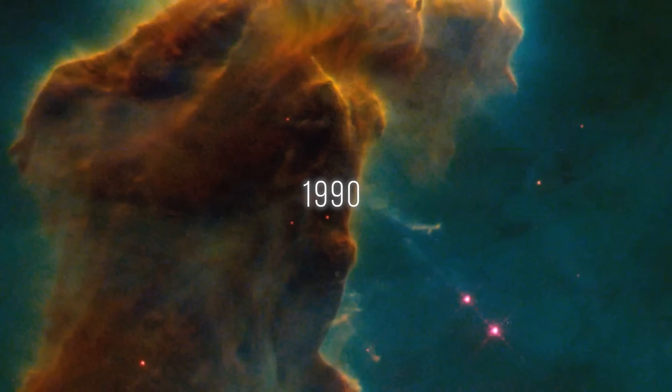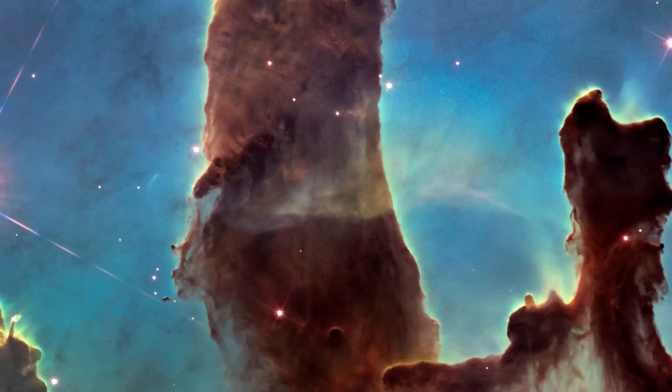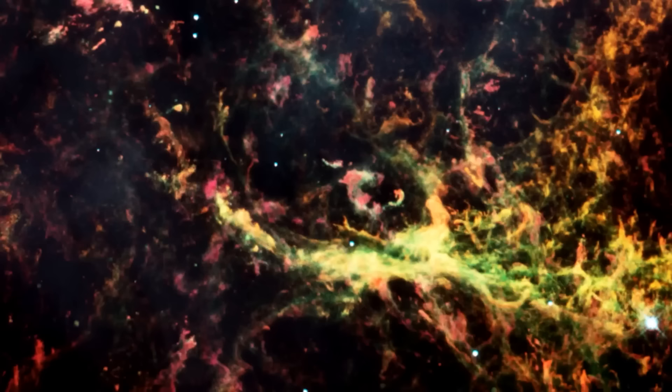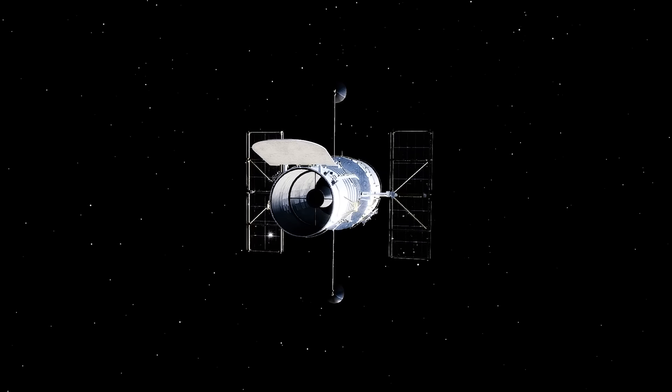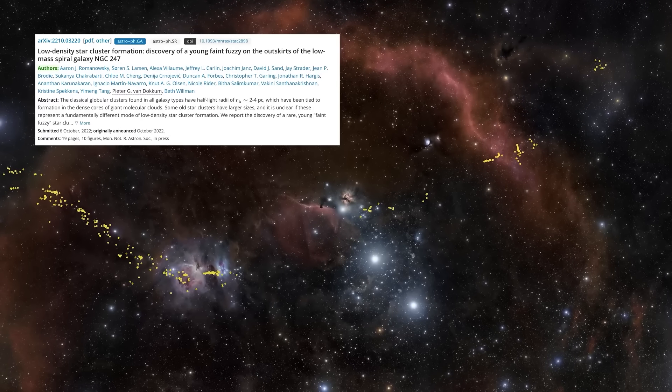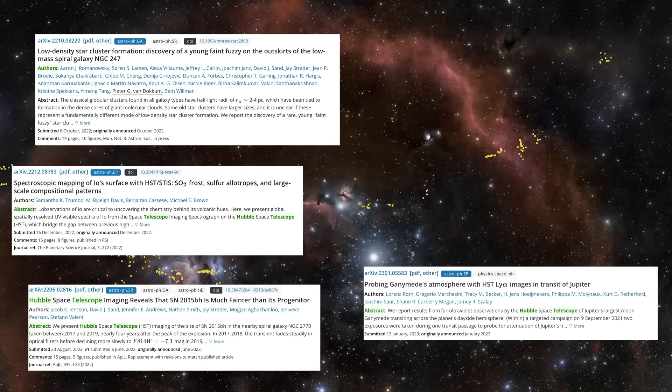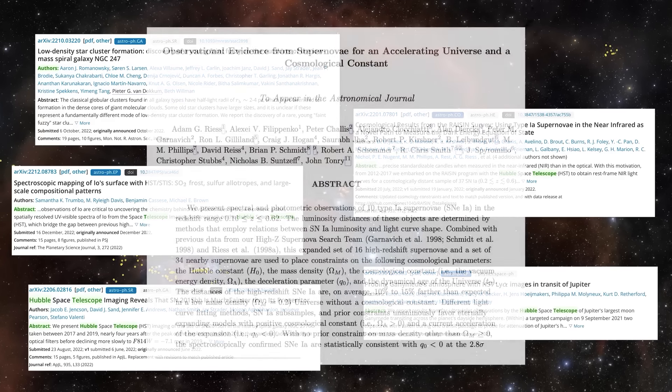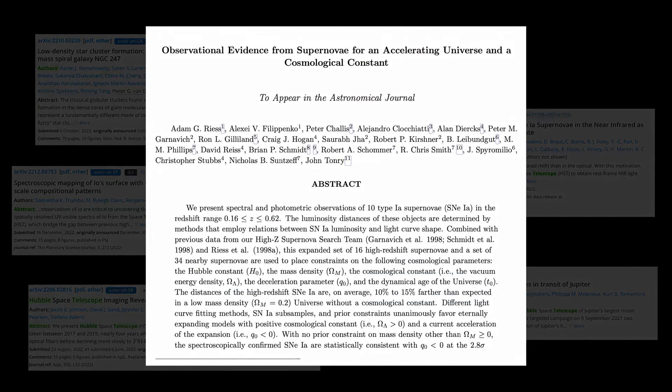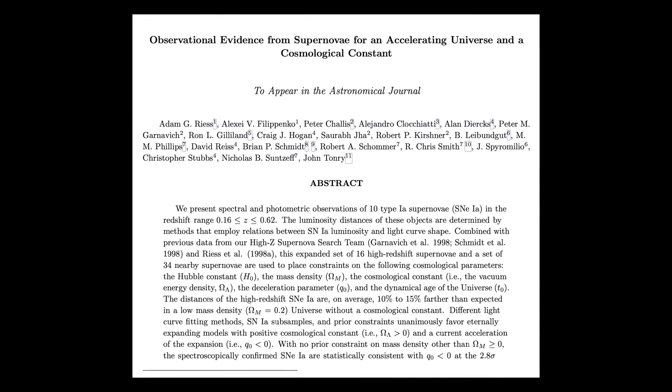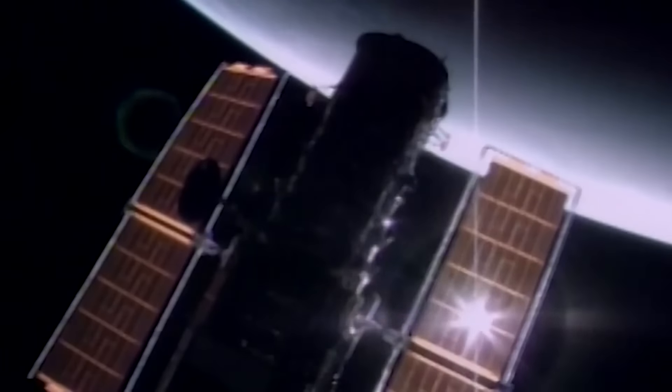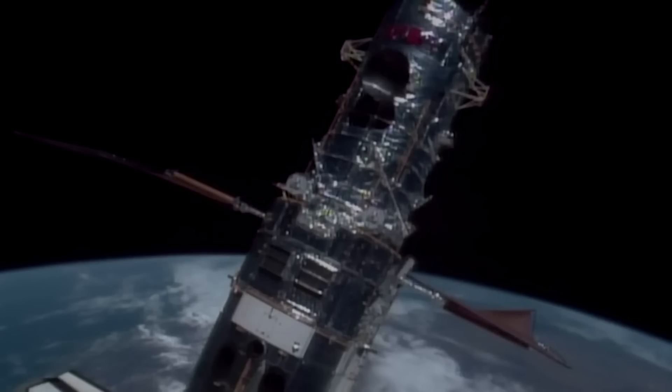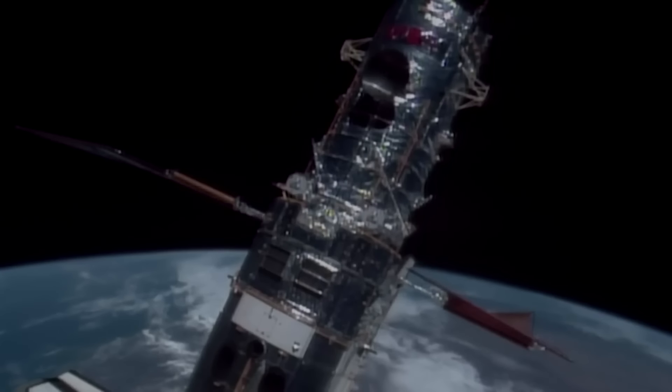Launched in 1990, the Hubble telescope, comparable in size to a bus, orbits the Earth with a fixed gaze on space. This positioning allows it to capture images of the universe without interference from atmospheric disturbances that impede ground-based telescopes. The telescope has undergone numerous upgrades, equipped with various instruments and filters, consistently maintaining its position at the forefront of human technology.